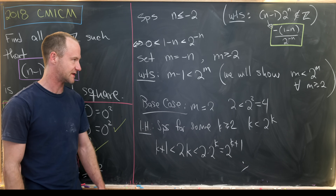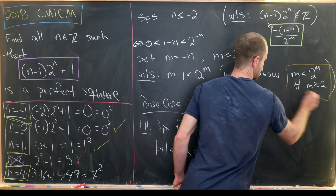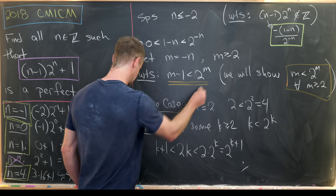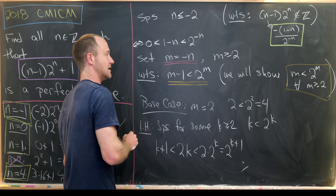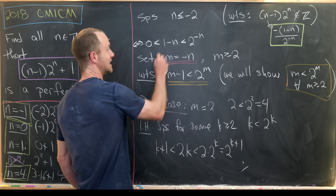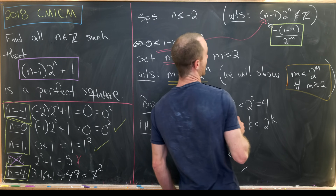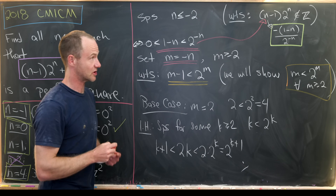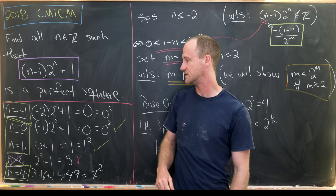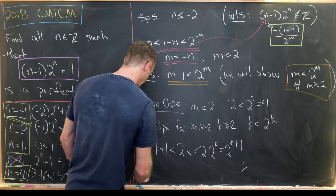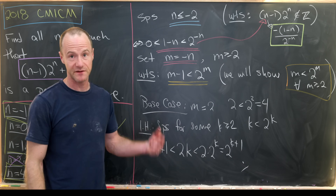Working back up: we've proven that m is less than 2 to the m, which implies 1 minus n is less than 2 to the minus n via the change of variables m equals negative n. That establishes that (n minus 1) times 2 to the n is not an integer, and so it cannot be a perfect square. That clears up all cases where n is less than or equal to negative 2.